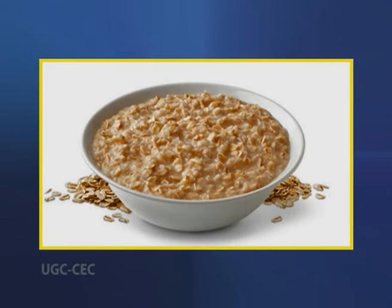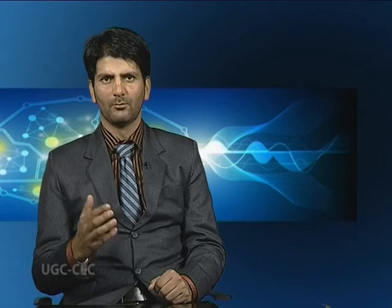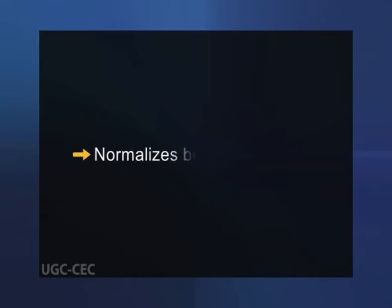Most plant-based foods such as oatmeal and beans contain both soluble and insoluble fiber. A high fiber diet has many benefits. First, it normalizes bowel movements. Dietary fiber increases the weight and size of your stool and softens it. A bulky stool is easier to pass, decreasing your chance of constipation.